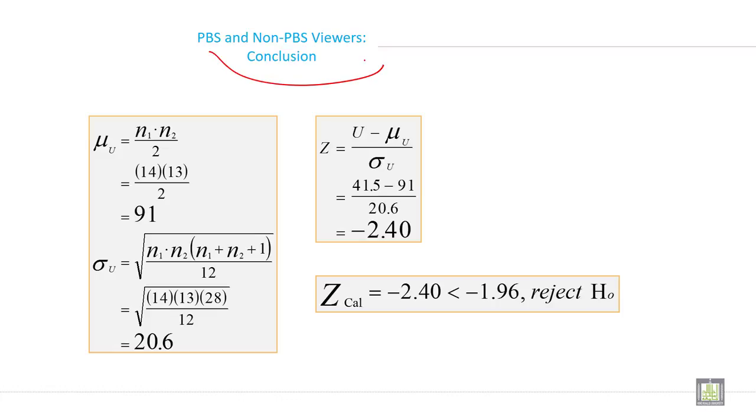Just remember the formulas for mu, standard deviation, and z. Calculate everything. So this is the mean if you put all the values in the formula, and this is the standard deviation, and this is the z value, minus 2.40.